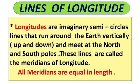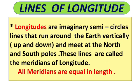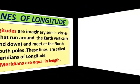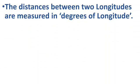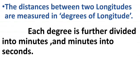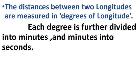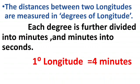All meridians are equal in length. The distance between two longitudes is measured in degrees of longitude. Each degree is further divided into minutes, and minutes into seconds. One degree of longitude is equal to four minutes.